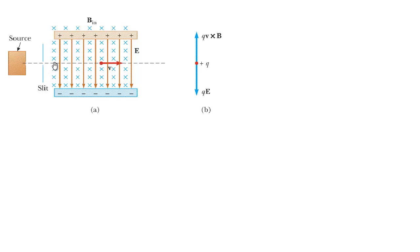As the charge enters the plates, it'll experience two forces — one due to the magnetic field and one due to the electric field. If the magnetic force is bigger than the electric force, it will curl upwards. If the electric force is bigger than the magnetic force, it will be pushed downwards. If those two forces are not in balance, the charge will be deflected up or down. Only those charges with the correct velocity will emerge along the straight dotted line.